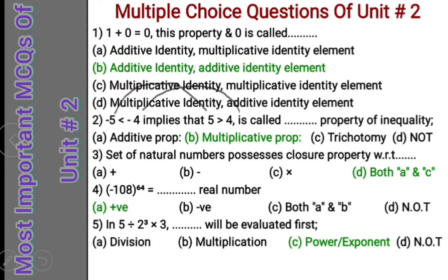The symbol changes only when both numbers are multiplied by a negative number. If we multiply by a positive number, the symbol will not change. This property is called the multiplicative property of inequality.